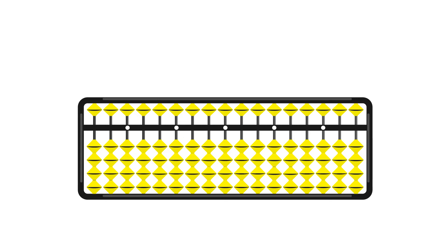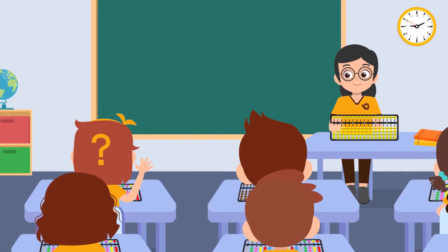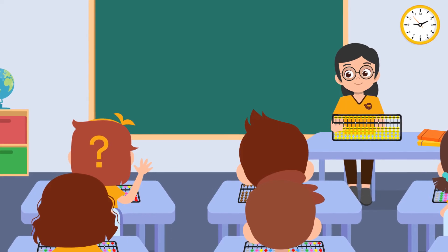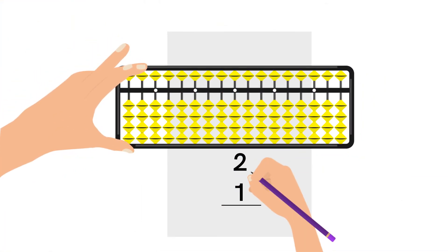This means we have cleared the value of the abacus. Any questions till now? Yes Ruby, what is it? Why do I have a pencil in my hand? Good question. I have a pencil because it saves time and helps me calculate faster.